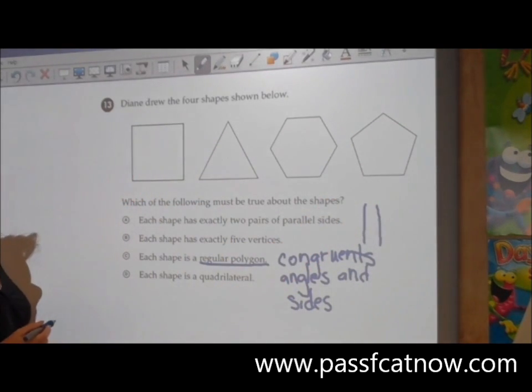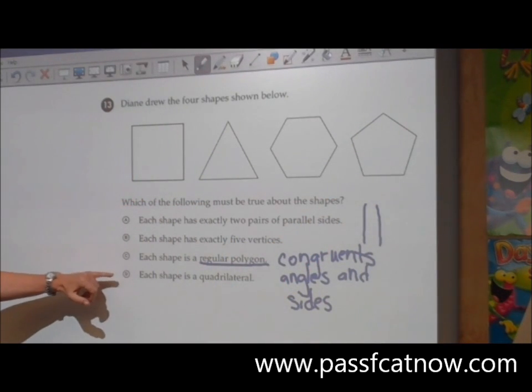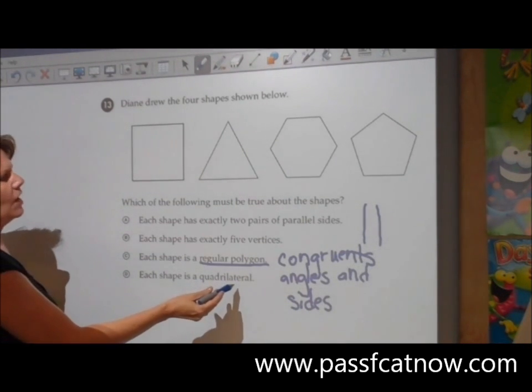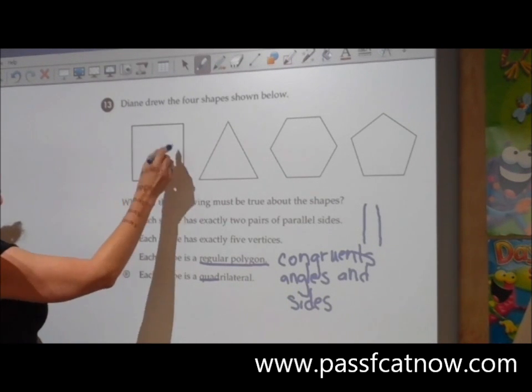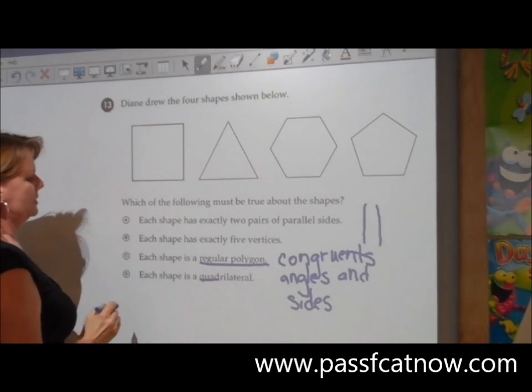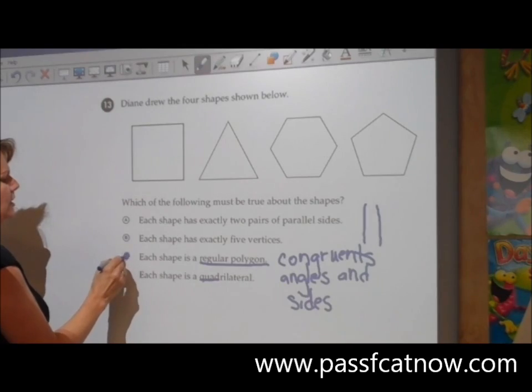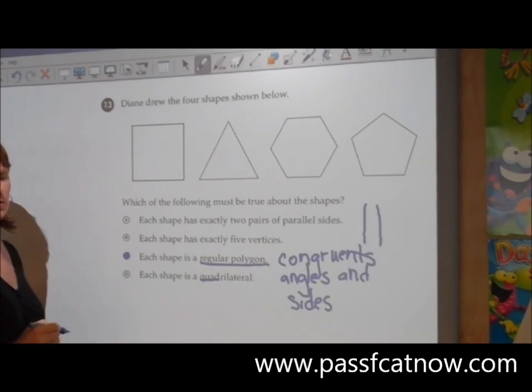Five sides, five angles are all the same. That's probably it. But let's double check this just in case. Each shape is a quadrilateral. Quad meaning four. One, two, three, four works for that but not the rest. Your answer will be C. Each shape is a regular polygon.